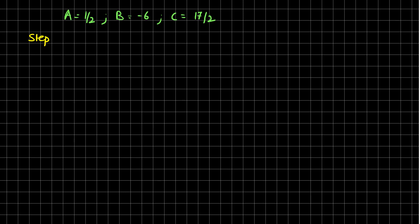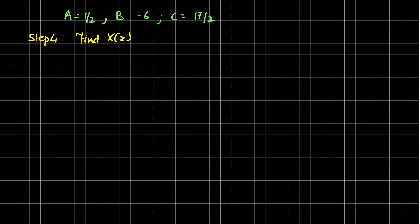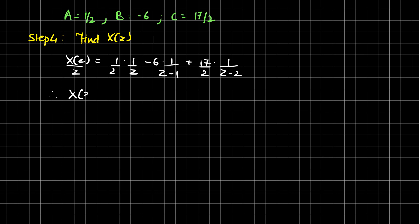Step 4 is to find the value of X(Z). We have X(Z)/Z equal to (1/2)·(1/Z) plus (−6)·(1/(Z-1)) plus (17/2)·(1/(Z-2)). Multiplying both sides by Z, the value of X(Z) is equal to 1/2 minus 6·Z/(Z-1) plus (17/2)·Z/(Z-2).